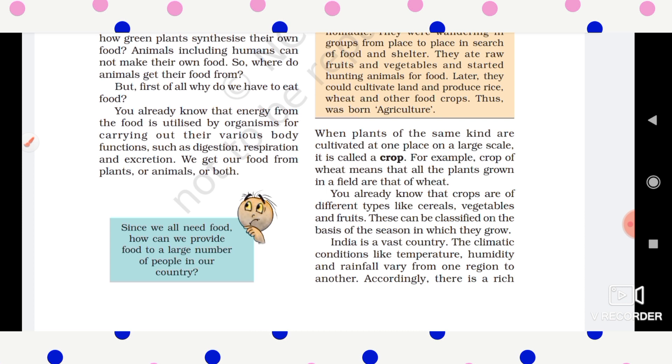So first of all, what is a crop? When plants of the same kind are cultivated at one place on a large scale, it is called a crop. Basically, we can't call a single plant a crop; there needs to be plants on a large scale. If we grow a single plant, we can't call it a crop. If we grow it on a large scale, then we call it a crop.